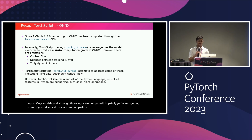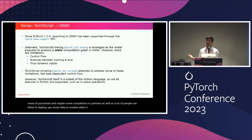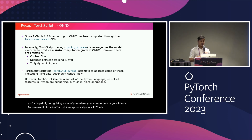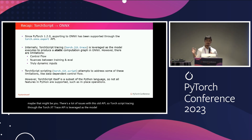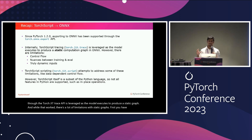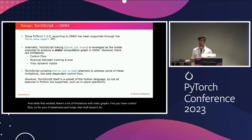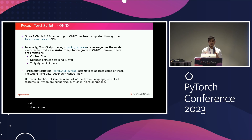How we did it before — a quick recap. Basically since PyTorch 1.2, we've exported to ONNX using the torch.onnx.export API. There are a lot of issues with this old API. TorchScript tracing through the torch.jit.trace API is leveraged as the model executes to produce a static graph. And while that worked, there are a lot of limitations. First, control flow — if statements and loops don't do a great job with TorchScript tracing. It doesn't handle the nuances between training and eval either, and it also doesn't handle truly dynamic inputs. So that is a problem.